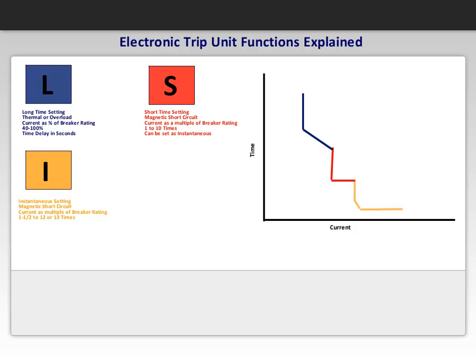Lastly is G, which represents the ground fault setting, which covers the settings for the low-level currents to ground and time delay settings shown by the green line on the curve. This flexibility allows the customer to coordinate the protection needed for all circuit breakers in the building system.